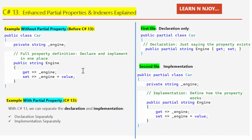The getter returns the current value of underscore engine — we write: get returns underscore engine. The setter updates the underscore engine field with the new value provided from outside the class — we write: set goes to underscore engine equals value. That's how we used to write properties before C# 13.